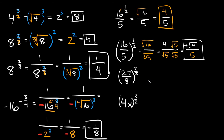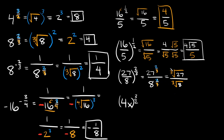Here we have 27 over 8, raised to the two-thirds power. We can split this as 27^(2/3) over 8^(2/3). Since there's a 3 in the denominator for both, we take the cube root of each: the cube root of 27 over the cube root of 8, then raise each to the second power. The cube root of 27 is 3, and the cube root of 8 is 2. So we get 3 squared over 2 squared, which is 9 over 4.